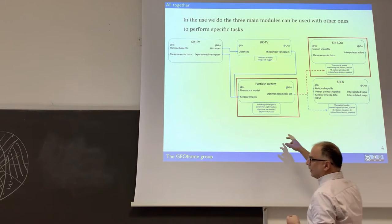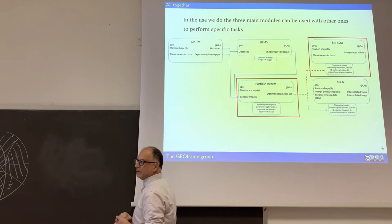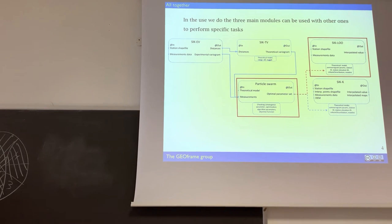The particle swarm here is used actually for fitting theoretical semi-variogram. Now, we could have used other methods, because we have the theoretical semi-variogram as a function, and we have the data, we could have used least squares. At that time, we have a stochastic system for estimation of parameters, and instead of using, maybe, conceptually more simple least squares estimator, we use those ones.